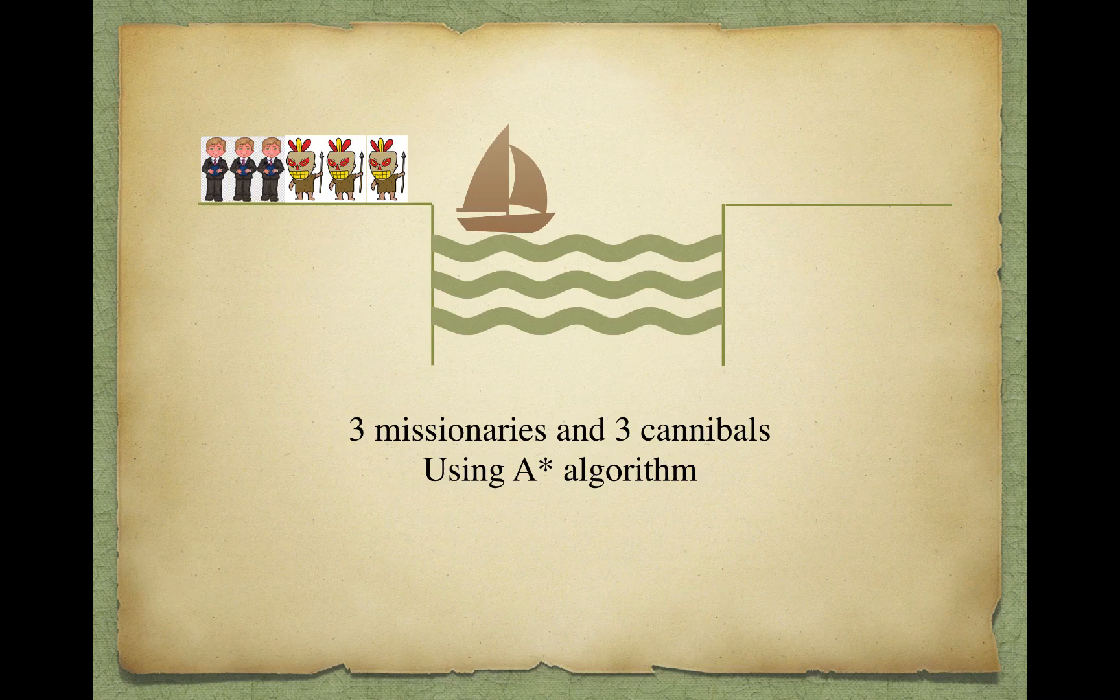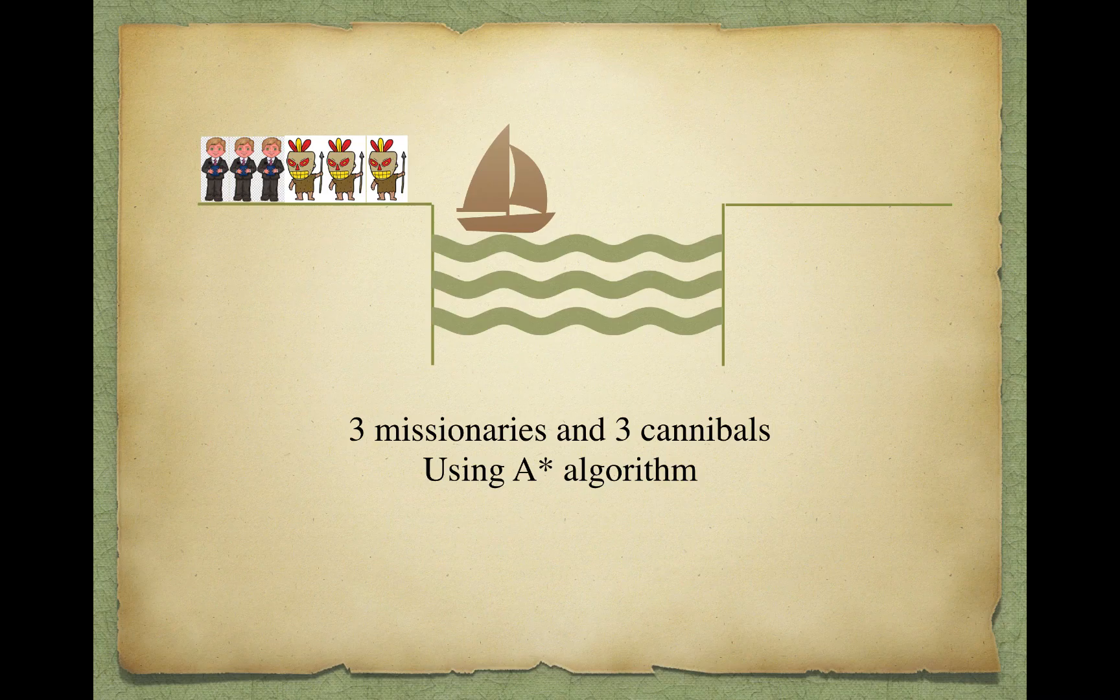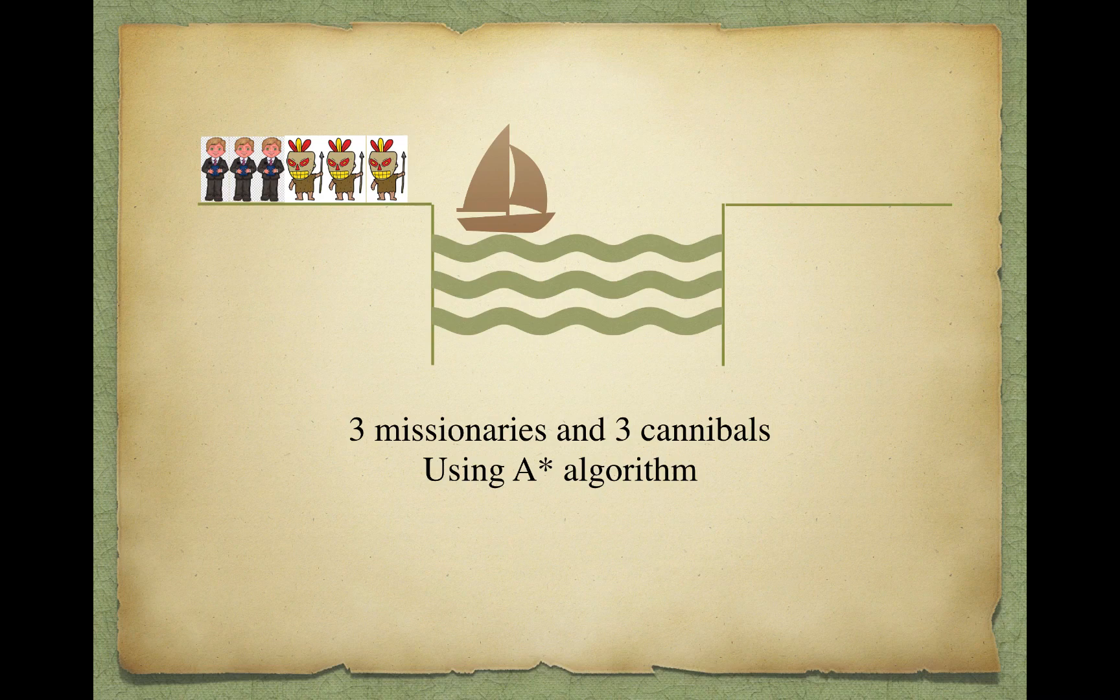Our job is simple. We just have to take all six members from the starting point to the destination point without killing a single missionary. The condition is if they get outnumbered by the cannibals, the missionaries will die and our program fails. I hope we all know what the conditions are.